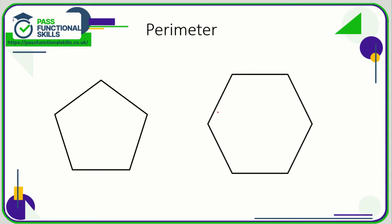If it's a regular shape, remember all sides are equal. So if you're told it's a regular pentagon — a pentagon is a five-sided shape — and they tell you it has a side length of six, then every side is going to be six, and five times six, or six added five times, is 30.